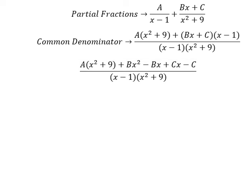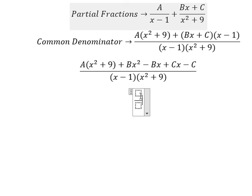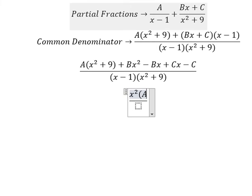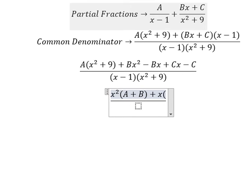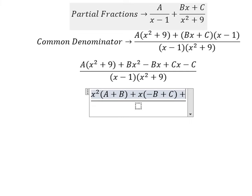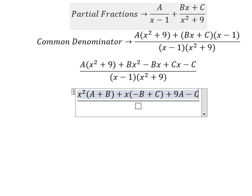Next we arrange based on the powers of s. For s squared we have (A plus B). For s we have (negative B plus C). For the constant term we have (9A minus C).